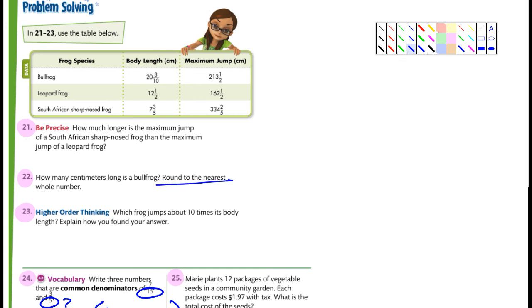23, which frog jumps about ten times its body length? Explain how you found your answer. Well, just remember, anything you multiply by ten, if I had 15.3, and I multiplied by ten, it would be, I would move the decimal just one place over, and that would be 153. Okay? So I'll let you guys figure that one out.